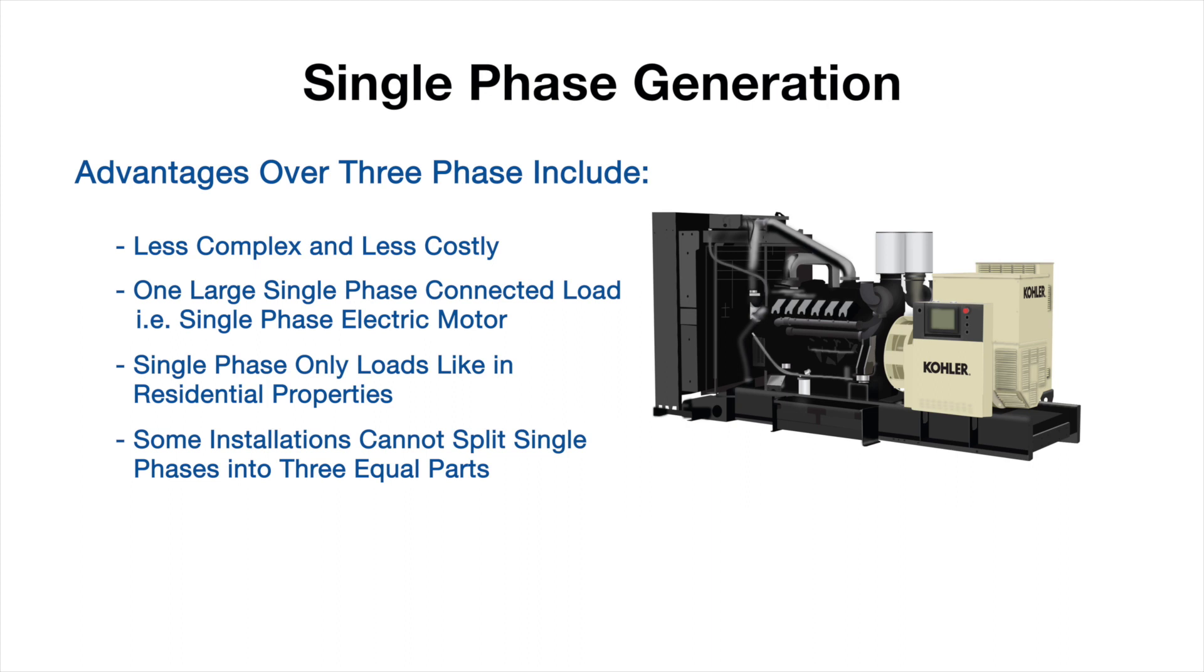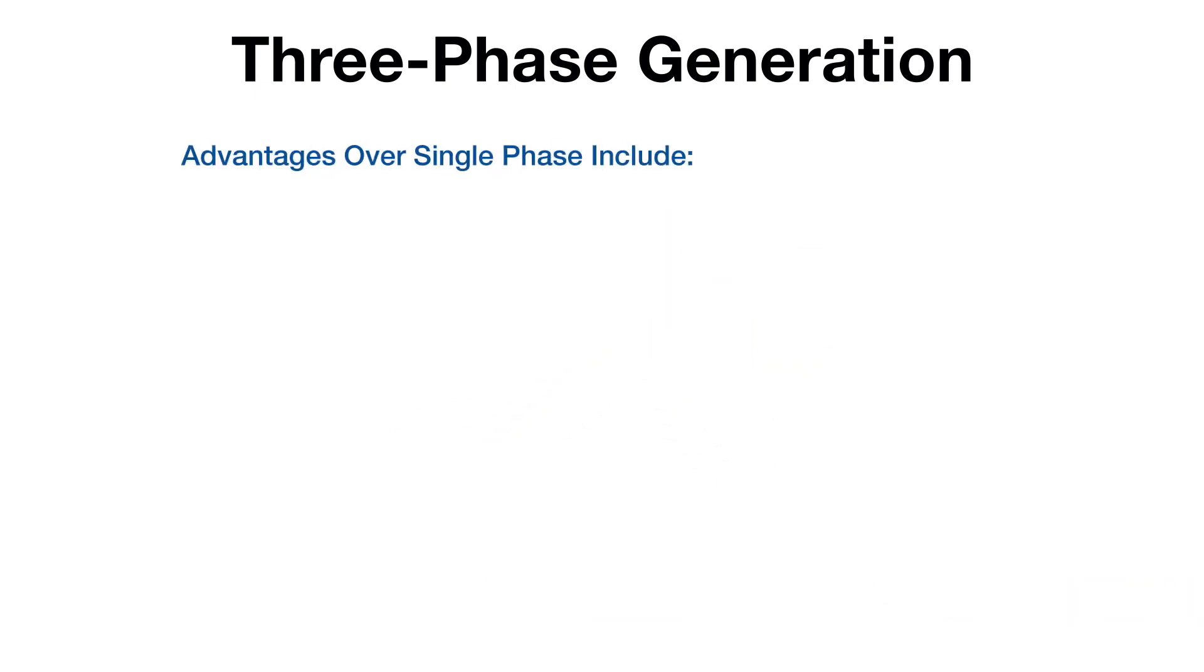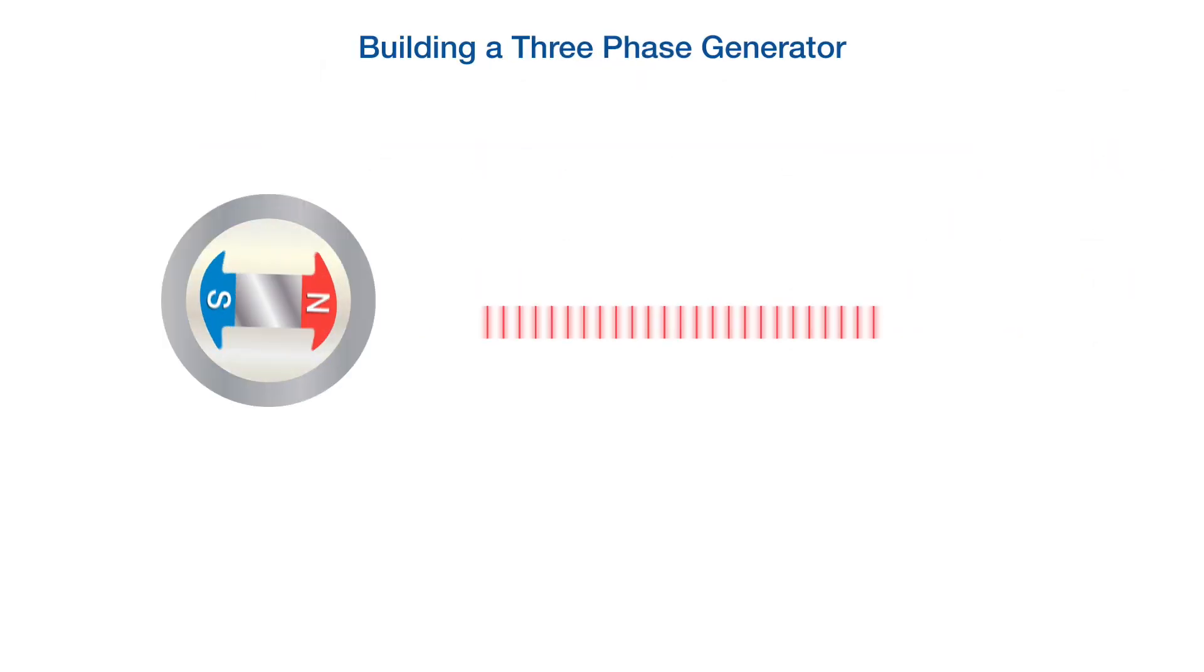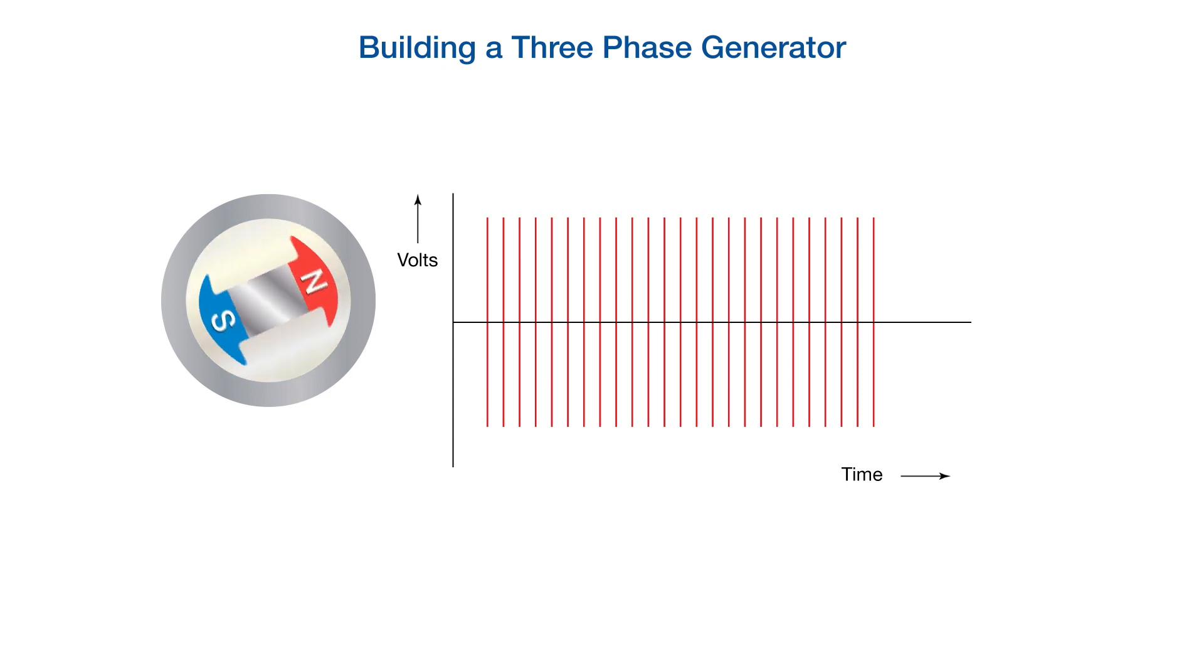While for some applications there are larger single-phase generators, the majority of loads above 15 kilowatts use three-phase generators. Advantages over single-phase include more compact, greater efficiency, and can manage greater loads. As indicated, a single-phase brushless generator with a rotating magnetic field has one set of coils wound into the stator. A three-phase generator is made possible by winding into the stator three sets of coils.